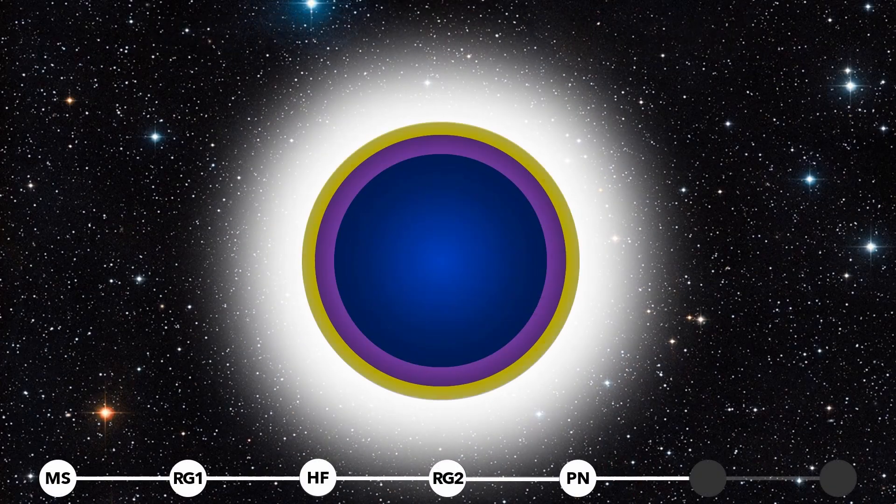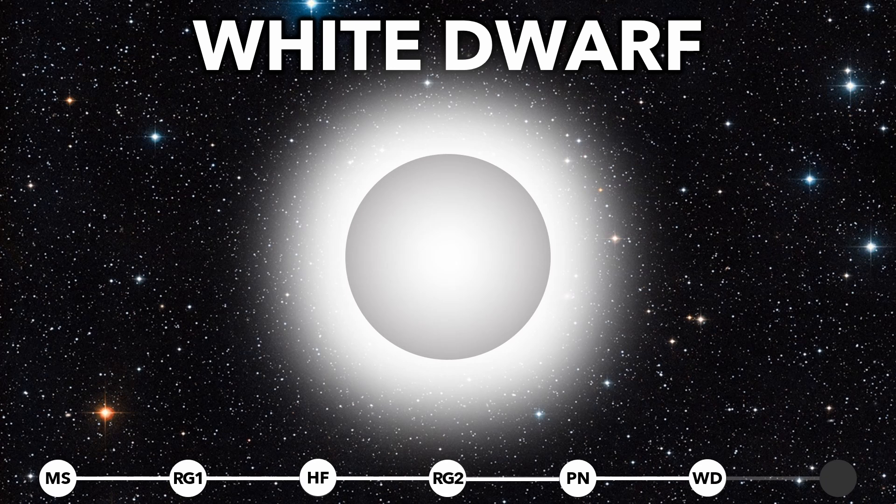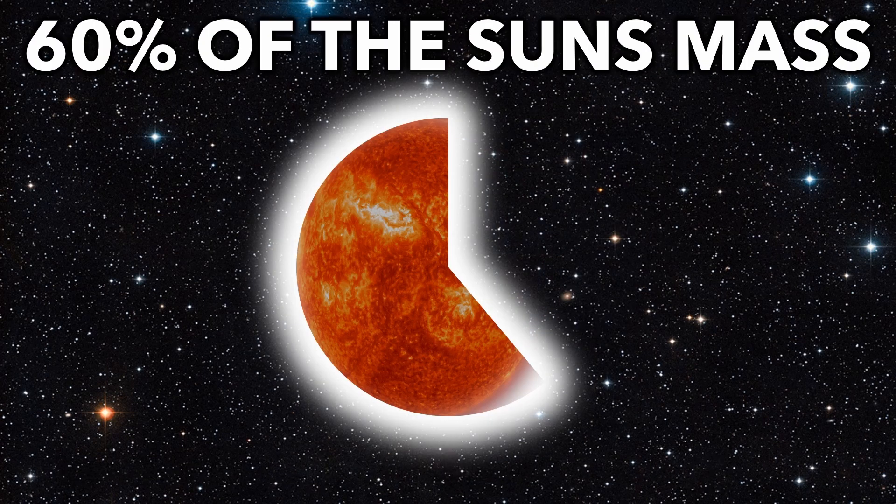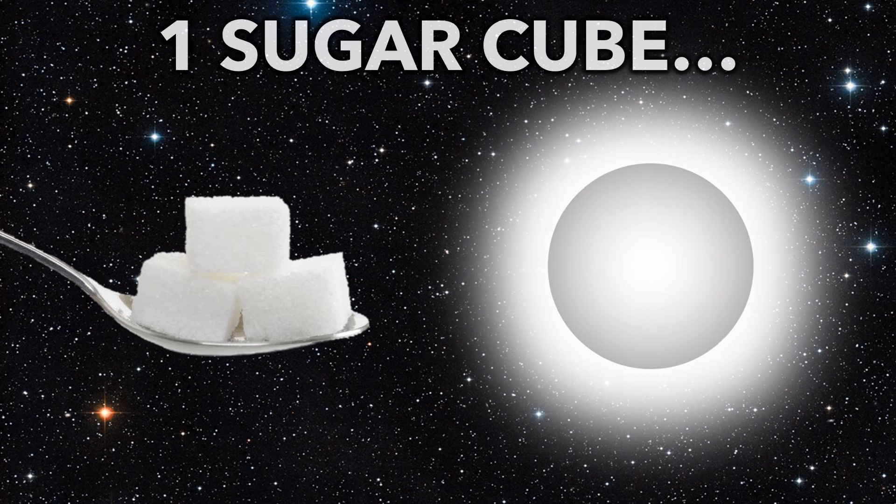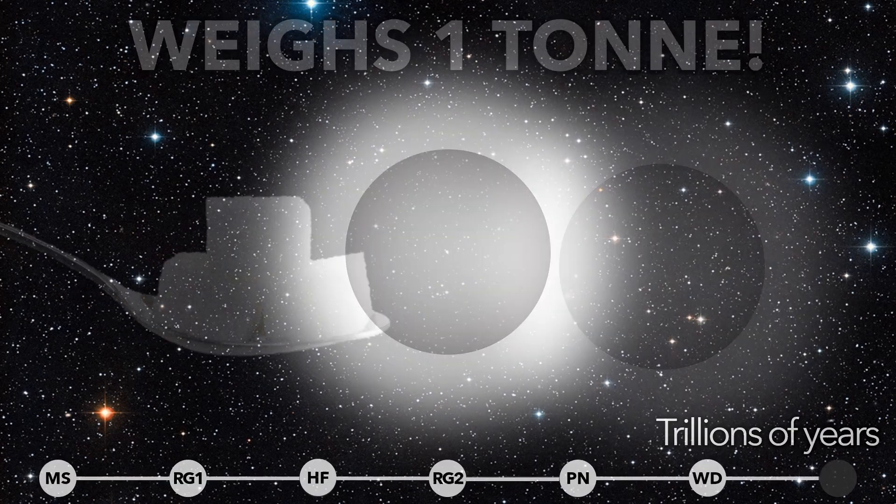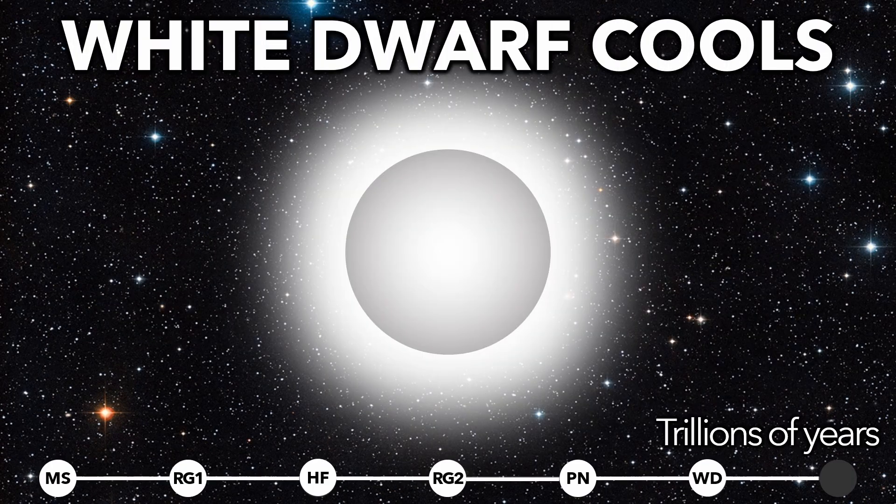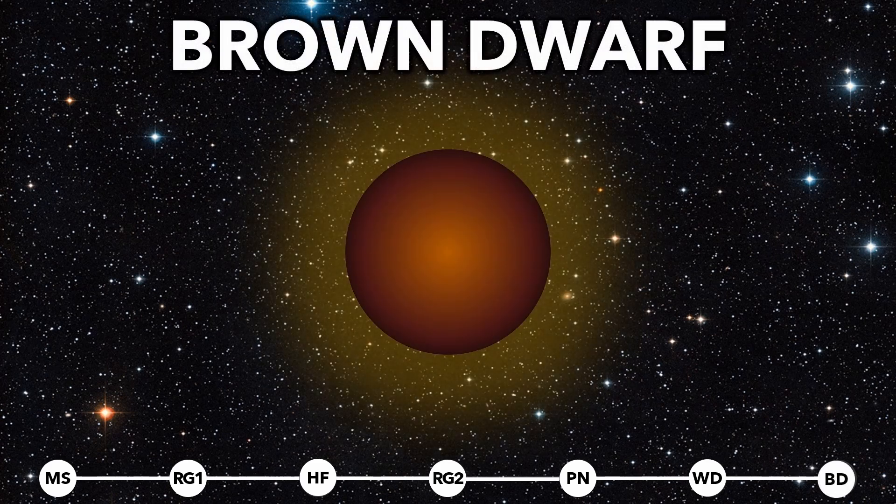The remaining core, mostly made of carbon, is called a white dwarf. At the size of the Earth, but with 60% of the Sun's mass, one sugar cube of the white dwarf would weigh one tonne. Over trillions of years, the white dwarf slowly cools down to form a brown dwarf.